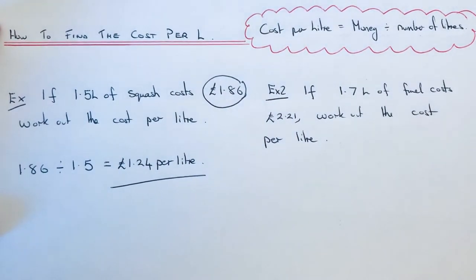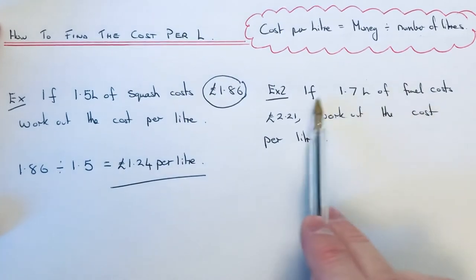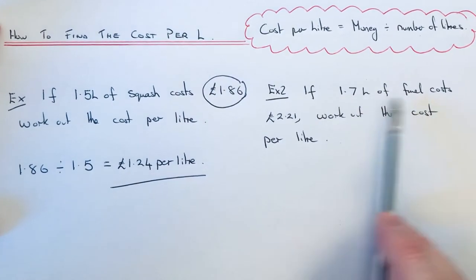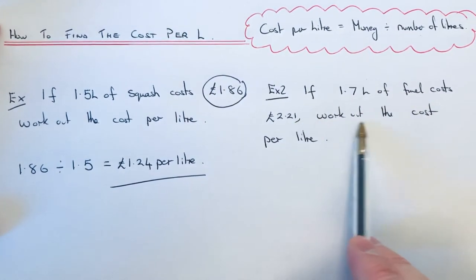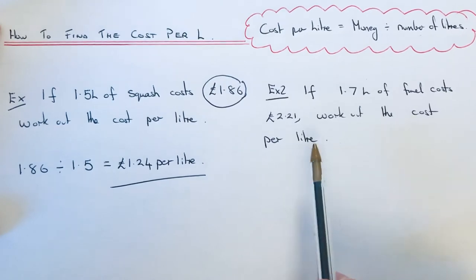Let's have a look at example 2. If 1.7 litres of fuel costs £2.21, work out the cost per litre of the fuel.